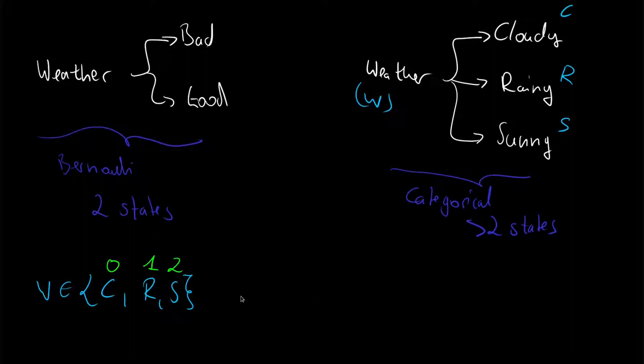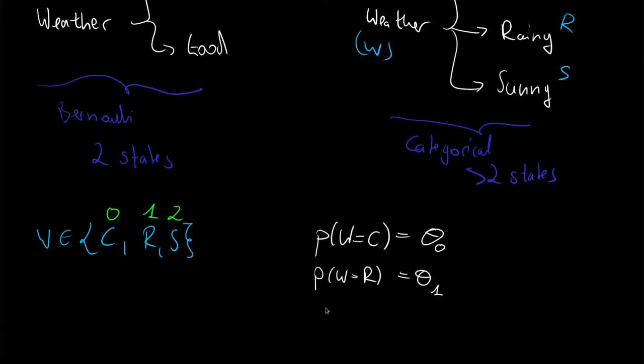So this means we have to save also three probabilities. So we have to save the probability of the weather being cloudy, which we will call theta zero. Then the probability of the weather being rainy, which is theta one. And the probability of the weather being sunny will be theta two. And this all together can then be saved in an array, and we will call this the theta array.